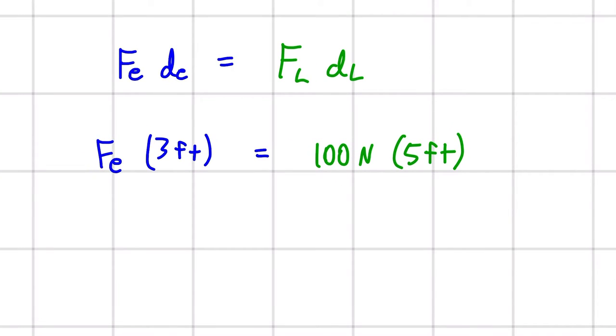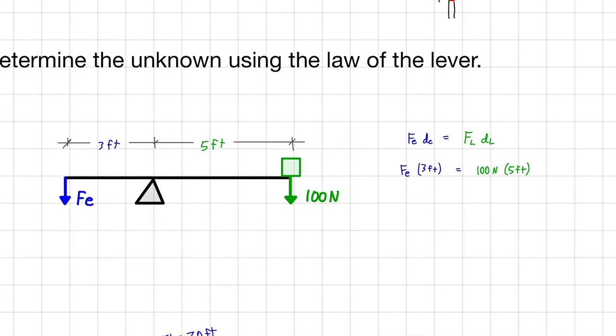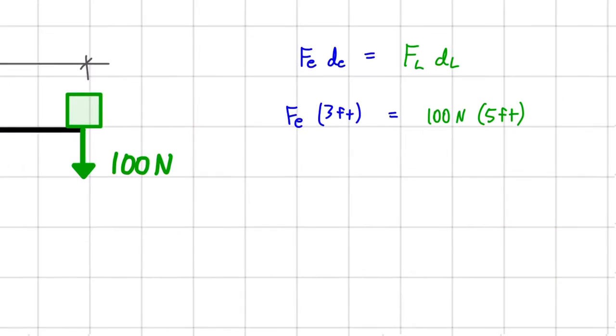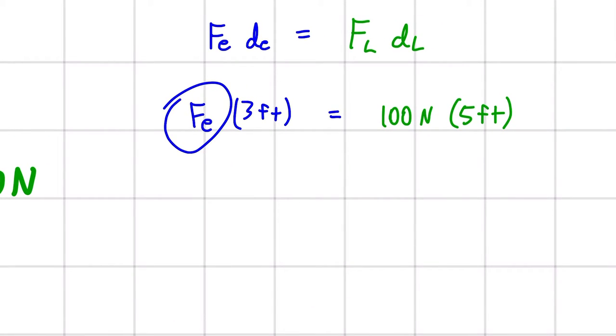All right, and simple as that, we've got our formula set up. We've got all of our values plugged into the equation. Now it's just a matter of simplifying and isolating for our unknown. So to do that, we're going to bring this 3 feet down to the other side as a division, because here it's a multiplication. So we bring it to the other side, and it will be a division.